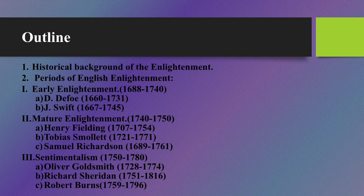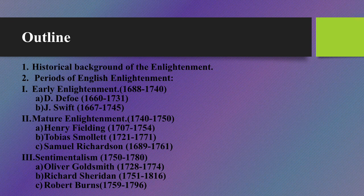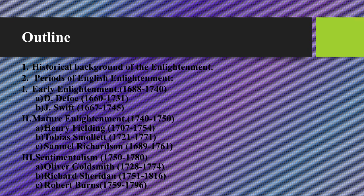During this lecture, we are going to discuss the following questions. The first: the historical background of the Enlightenment. The second: the periods of the English Enlightenment — Early Enlightenment, featuring Daniel Defoe and Jonathan Swift; the Major Enlightenment, featuring Henry Fielding, Tobias Smollett, and Samuel Richardson; and the last period, Sentimentalism, with Oliver Goldsmith, Richard Sheridan, and Robert Burns.